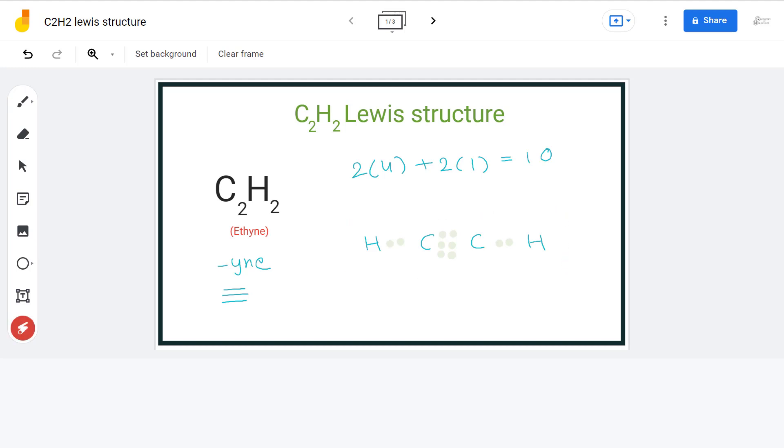Every atom present in this structure has a full outermost shell. This is the final Lewis structure of Acetylene.